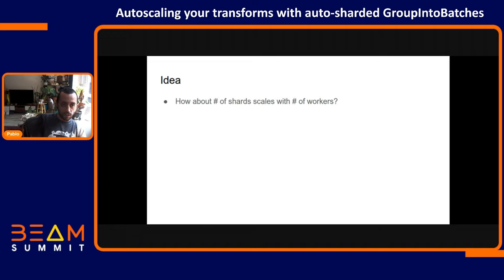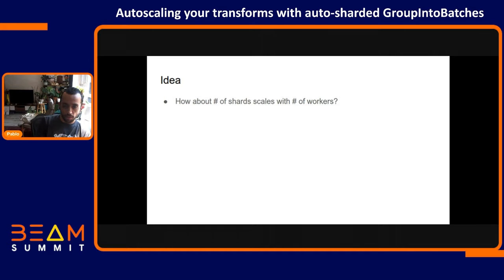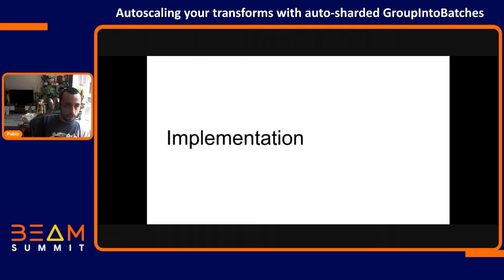So this is a common problem where our sinks have a fixed number of shards, and if you want to change the number of shards you need to update your pipeline and launch it again. The idea is: how about we make the number of shards in our pipeline scale with the number of workers? If our runner or operations people determine we need 10 machines, we run with a specific number of shards, and if our runner scales up to 20 machines, then we should double the number of shards so the throughput and parallelism towards our sinks also doubles.